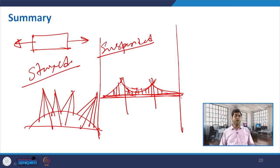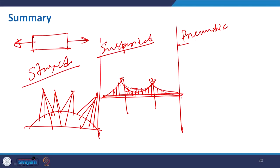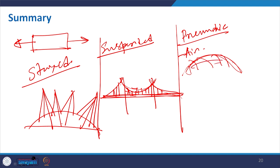Then pneumatic structure: you use air and give pressure so the structure makes a dome form and with cable you give shape to it. This is useful to make portable structures, convention halls, convocation halls, or large span coverage similar to the Millennium Dome, but here the whole thing is done through air pressure management with some cable to give the shape.